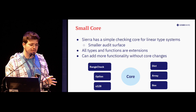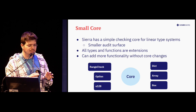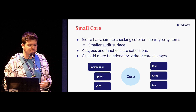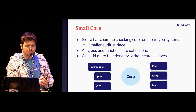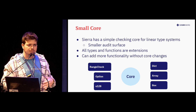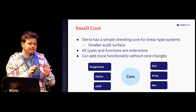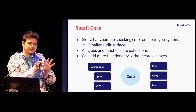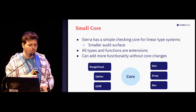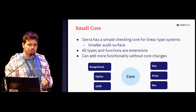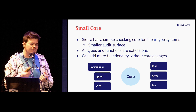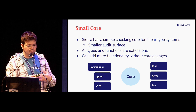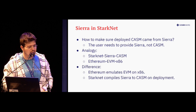On top of this linear type core, we have a lot of extensions: the dict, the array, the box, all kinds of things. That makes it very easy to audit — you can audit this very small core, and then everything else is implemented on top of it.